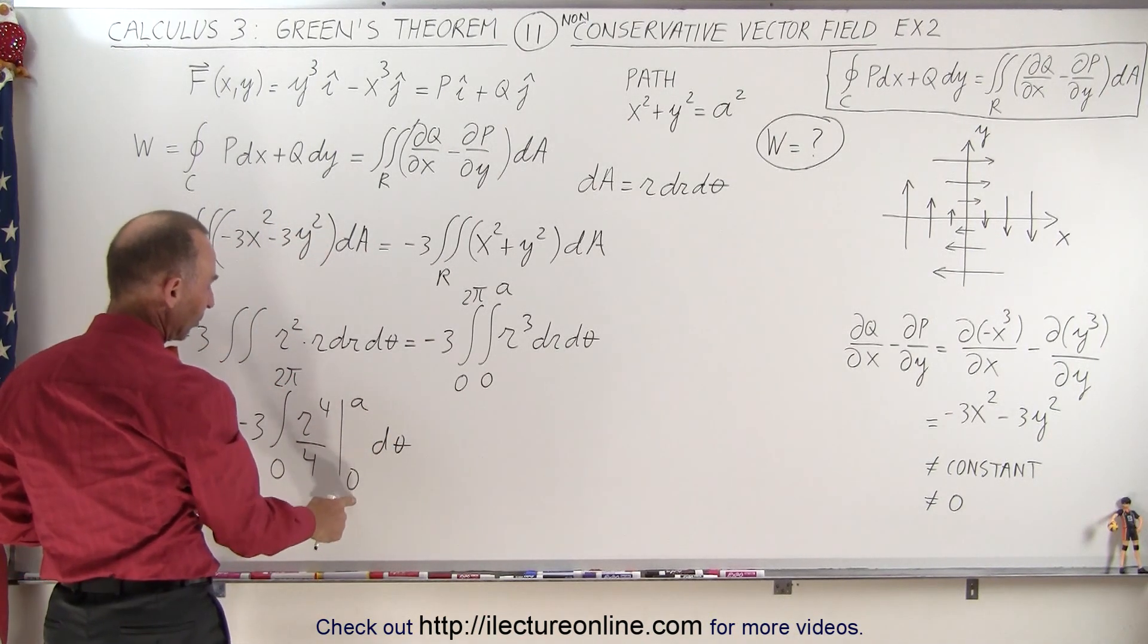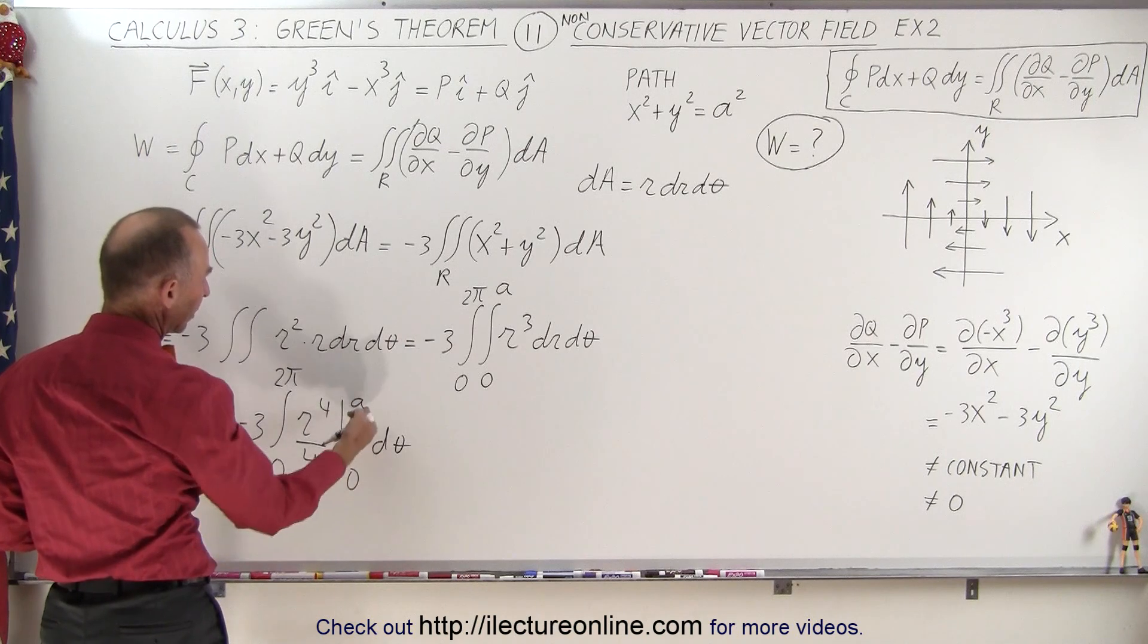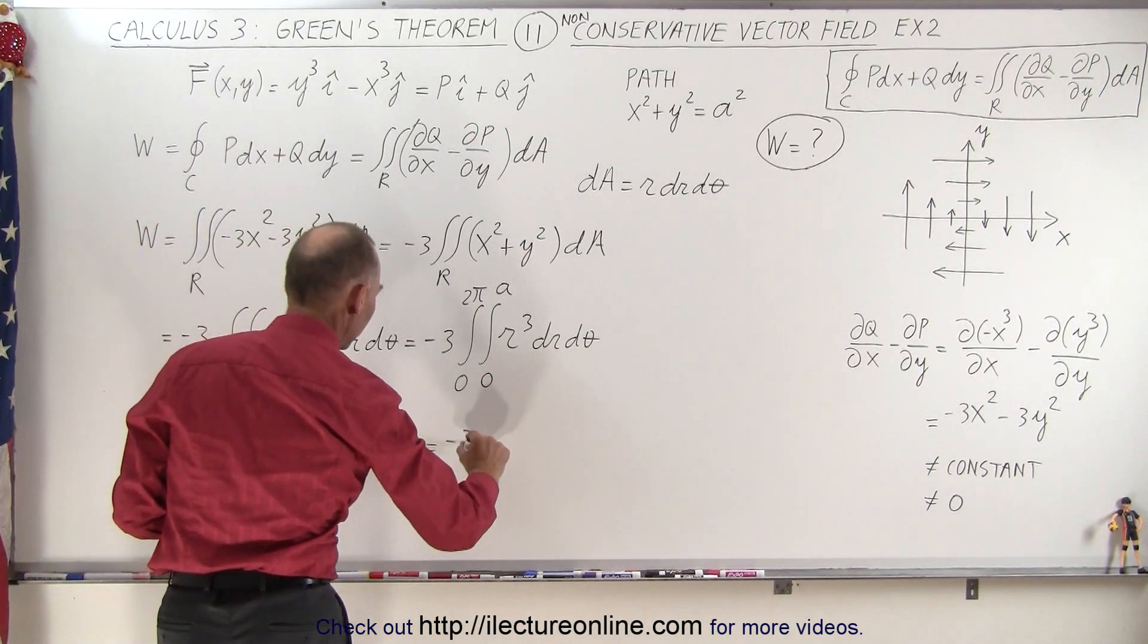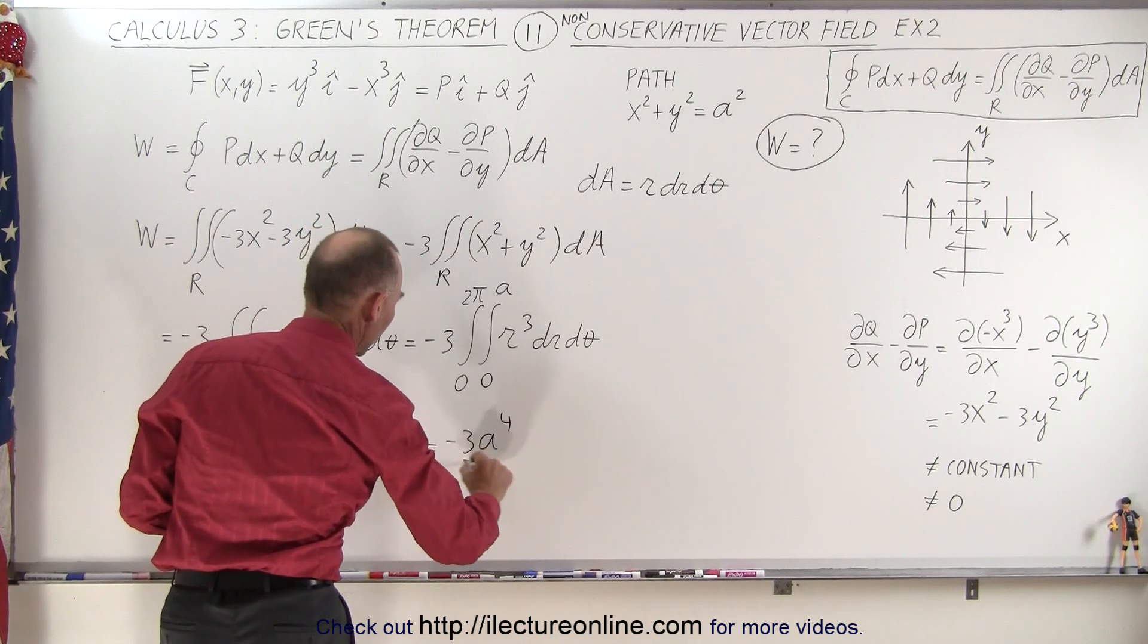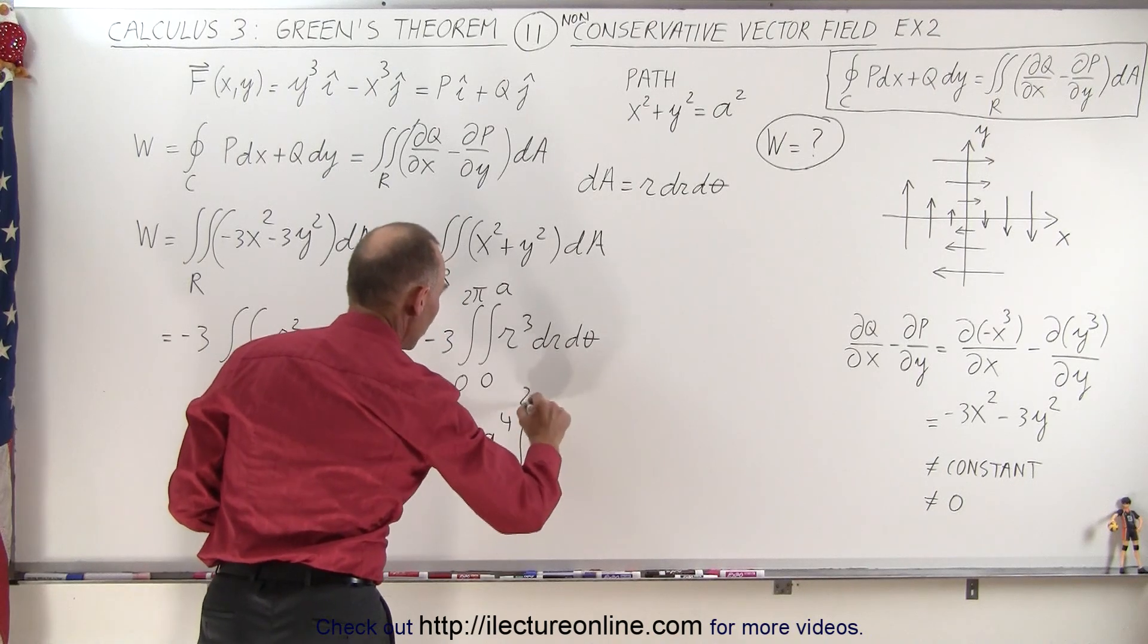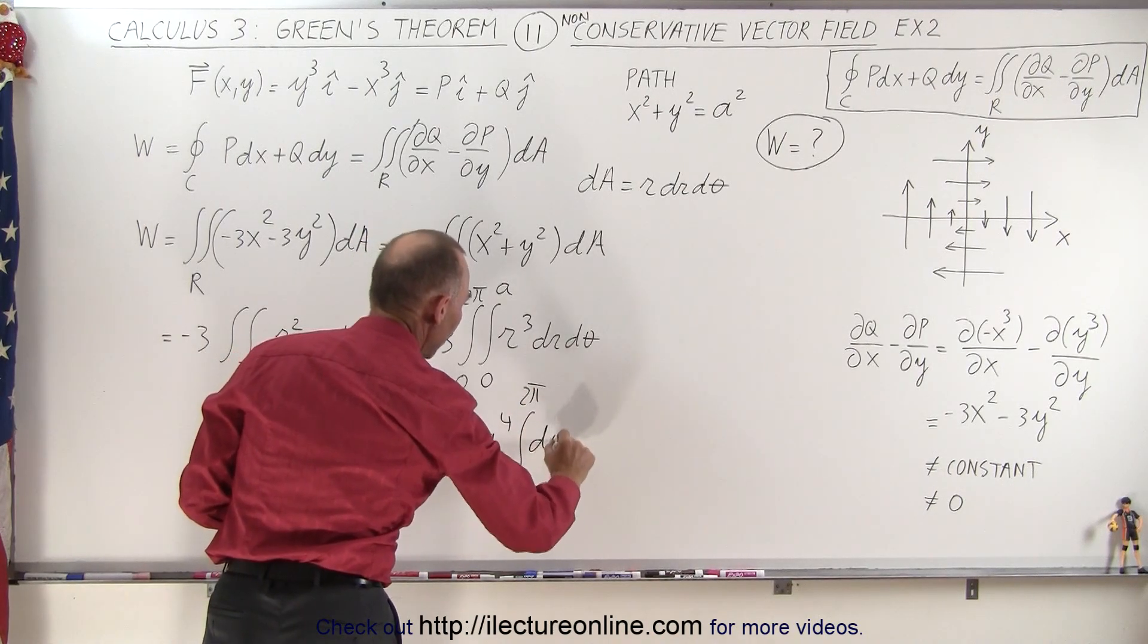So now when we evaluate this, plug in the lower limit, we get 0, plug in the upper limit, we get a to the 4th over 4. So this is equal to minus 3a to the 4th over 4 times the integral from 0 to 2 pi of d theta.